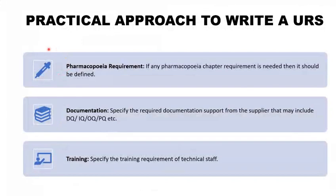Next is pharmacopoeia requirements — if any pharmacopoeia chapter requirement is needed, it should be defined. Next is documentation — specify the required documentation support from the supplier, which may include DQ, IQ, OQ, or any other deliverables and test scripts. Finally, training — specify the training requirements for technical staff, including detailed practical and theoretical knowledge to be provided to end users.